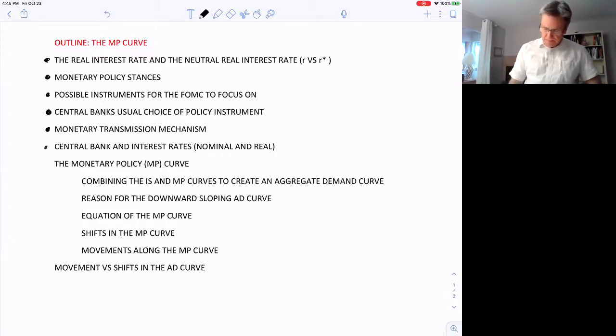Then we'll go through how the central bank affects the real interest rate. It's easy to affect the nominal interest rate by buying and selling bonds, but how does that affect the real interest rate in the economy? Then we'll go through the monetary policy curve and we'll create that curve, show you how it works, combine it with the IS curve, and then show how that creates the downward sloping aggregate demand curve. And what happens when, what makes this curve shift and what causes a movement along the curve? So there's a difference here as usual between a shift and a movement.